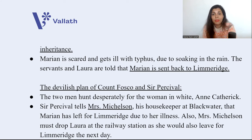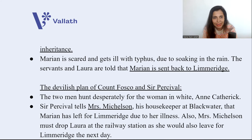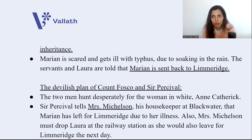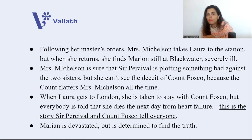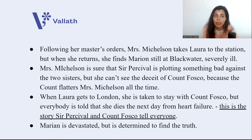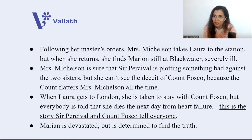Marianne is scared. She gets ill with typhus because she got completely soaked in the rain while hiding. The servants and Laura are told that Marianne has been sent back to Limeridge because she is ill. Now, the devilish plan of Count Fosco and Sir Percival unfolds — the two men are desperately hunting for Anne Catherick. Sir Percival tells all the servants to leave. The housekeeper Mrs. Michelson is told to take Laura to the railway station the next day, supposedly to go to Limeridge. When Mrs. Michelson returns, she finds Marianne still at Blackwater. When Laura gets to London, she is taken to Count Fosco's house, and the next day everybody is told that Laura is dead — died from a heart failure — a story fabricated by Sir Percival and Count Fosco.